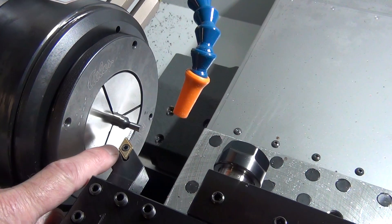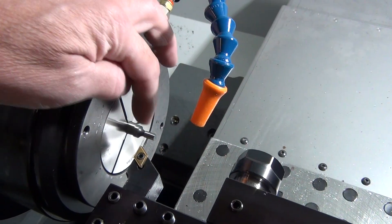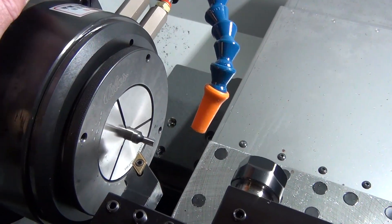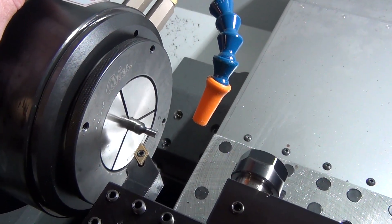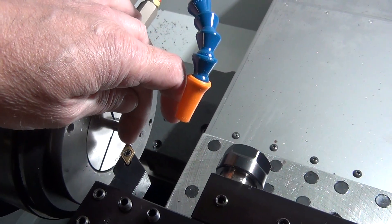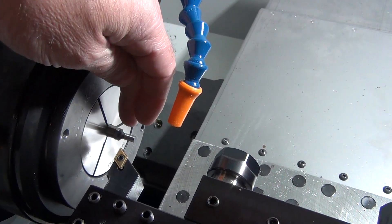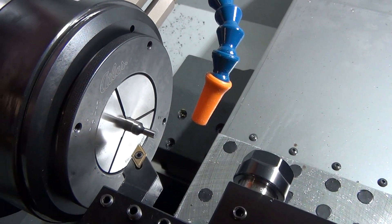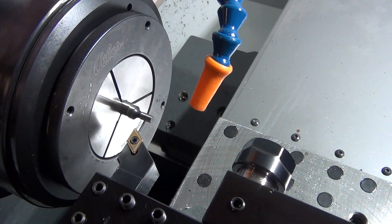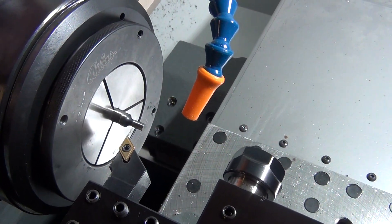One problem in the lathe though is I don't want that cutting edge to damage the wiggler. So I'm going to run the spindle in reverse so it will touch the cutting edge going the other way. These are hardened so there's not much trouble either way, but you don't want to damage your wiggler.